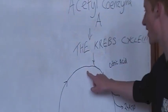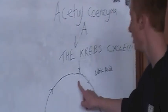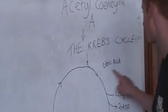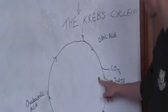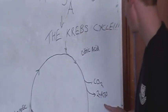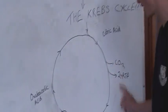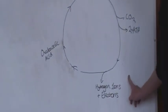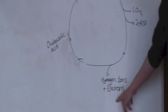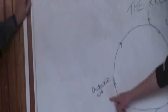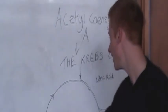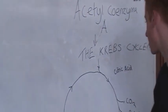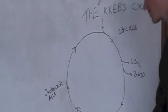Acetyl-coenzyme A is filtered into the Krebs cycle, where it is first converted into citric acid. This then releases carbon dioxide and two ATP molecules. The cycle continues, releasing hydrogen ions and electrons, and produces oxaloacetic acid, with the process continuing to release ATP, carbon dioxide, hydrogen ions and electrons.